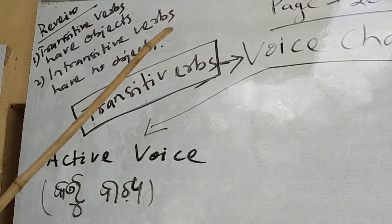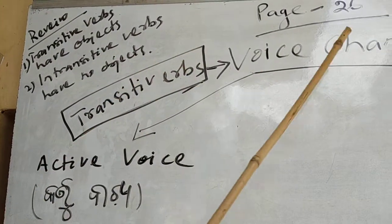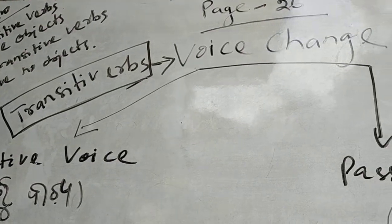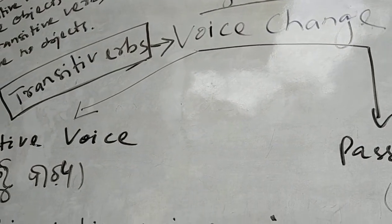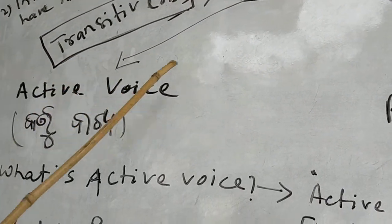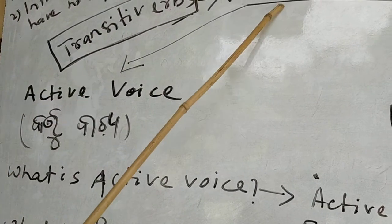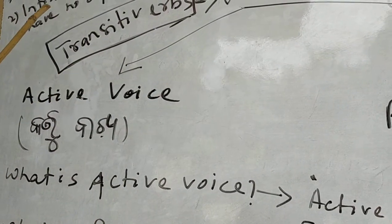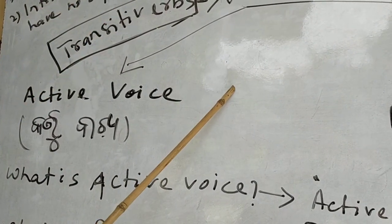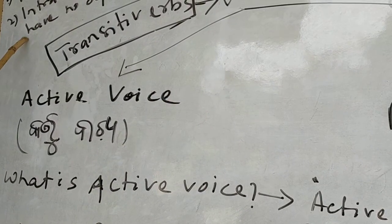So voice change is divided into two parts: one is active voice, another is passive voice. What do you mean by active voice and passive voice? Because only transitive verbs have the voice change, but intransitive verbs have no voice changes — you have to keep it in your mind. It is very important.